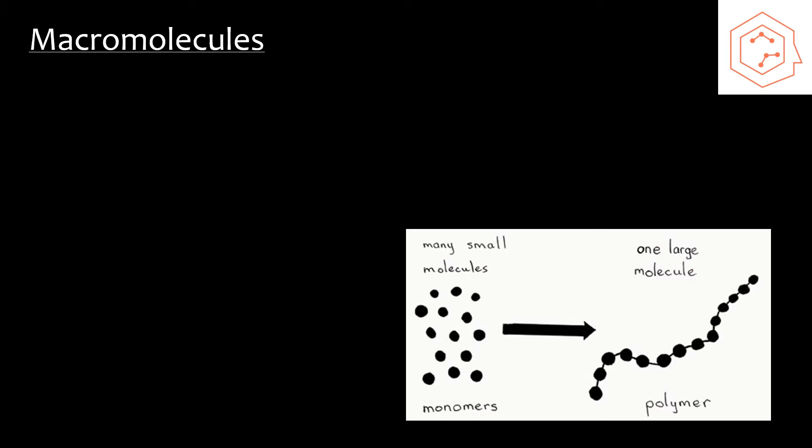Macromolecules are large complex molecules that are composed of repeating smaller subunits and they're covalently linked. The smaller repeating subunits are referred to as monomers, but the large macromolecules are known as polymers. This is a macromolecule and it's known as a polymer chain.